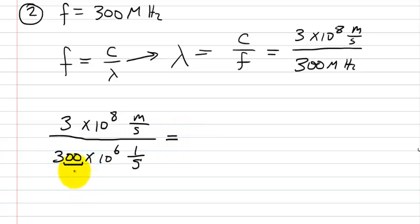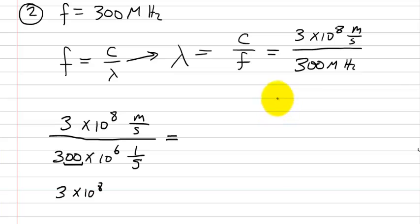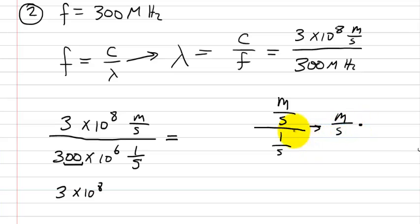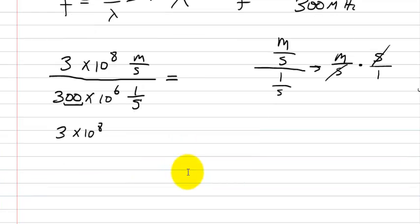You notice the two zeros, so you can take those two zeros and add them to the exponent 6. This simplifies to 3 times 10 to the 8. When dealing with meters per second all over something per second, you rewrite it as meters per second times seconds over 1 — the seconds cancel out, and you're just left with meters. So the wavelength is equal to 1 meter.